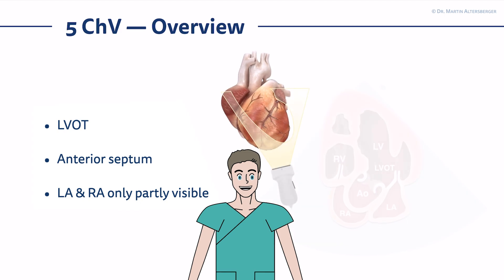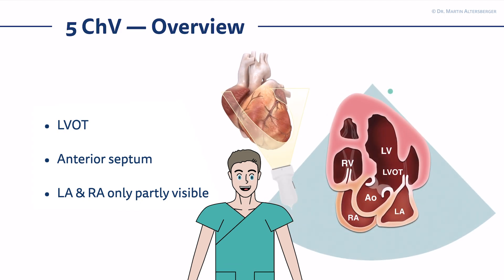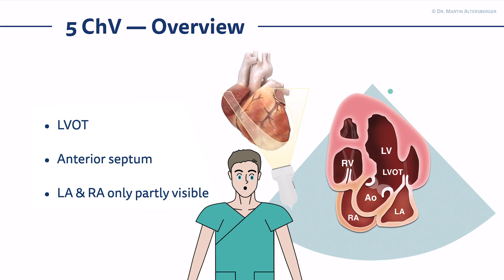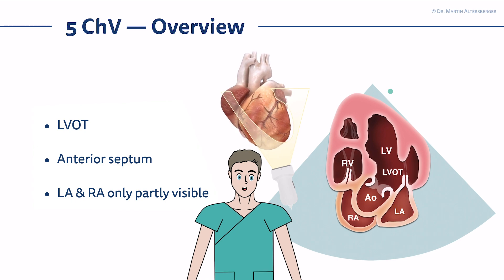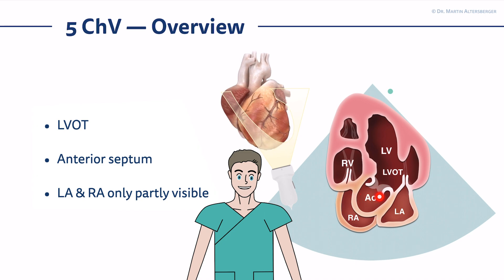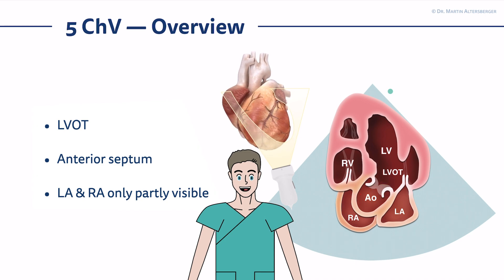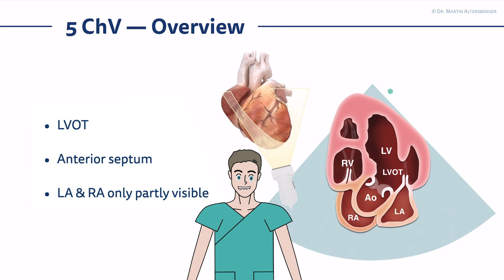What can you see in a five-chamber view? We see it here on the graphic. We lose parts of the right atrium and the left atrium. The term 'fifth chamber' is not entirely correct — it is actually the aortic valve, a valvular structure, which we call the five-chamber view. The fifth chamber here is the LVOT, and the left ventricle and still parts of the right ventricle are seen.